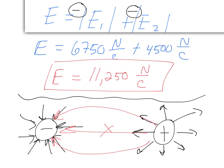If the problem doesn't specify left or right, use the diagram to see what's happening. If it says a positive source at the origin and a negative source at 10 centimeters, then field flow goes from positive to negative — to the right. Your answer's sign depends on the arrangement.